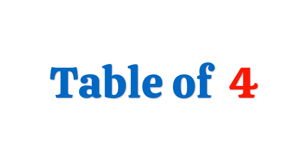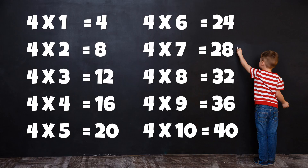Table of 4: 4 times 1 is 4, 4 times 2 is 8, 4 times 3 is 12, 4 times 4 is 16, 4 times 5 is 20, 4 times 6 is 24, 4 times 7 is 28, 4 times 8 is 32, 4 times 9 is 36, 4 times 10 is 40.